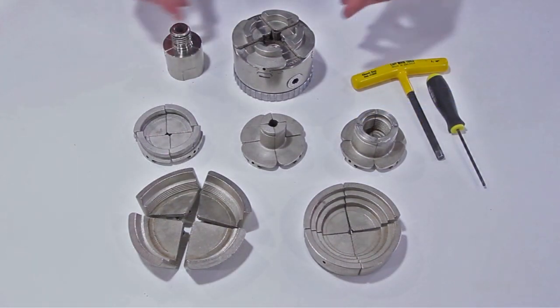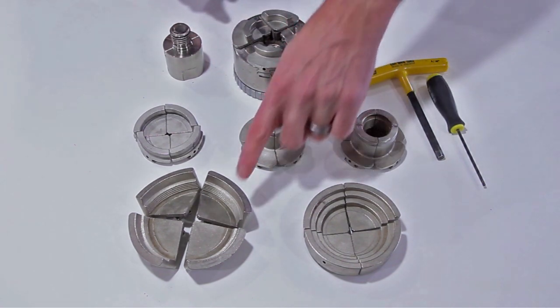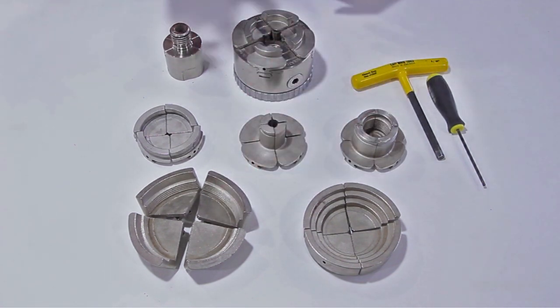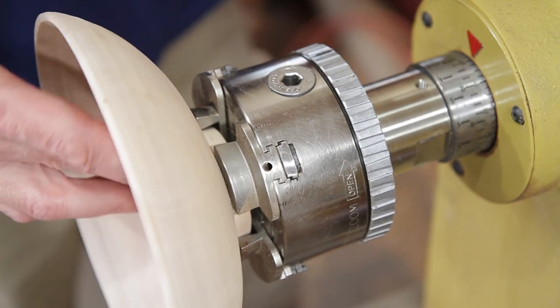Each one of them, so that's nice. You can either grab it or expand it. The standard set of jaws are great for small bowls and boxes.